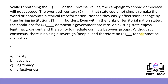For the fifth blank: 'Without such consensus there is no single sovereign people and therefore no blank for arithmetical majorities.' We can take a hint from the passage — the word 'legitimacy' appeared earlier in the paragraph. Option C — legitimacy — is the answer. Note that a word appearing earlier doesn't always become the answer for another blank, but here it fits the context since we're talking about democracy and legitimacy means something related to law or lawfulness.